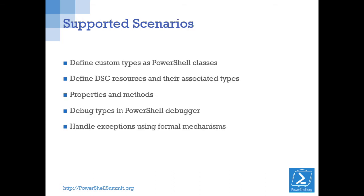In terms of scenarios we wanted to support: first, defining custom types as PowerShell classes. Second, defining DSC resources as a class along with their associated types. Supporting properties and methods as part of a class, being able to debug those types in the PowerShell debugger, and handling exceptions using more formal mechanisms than we have today.